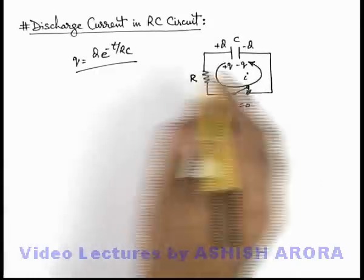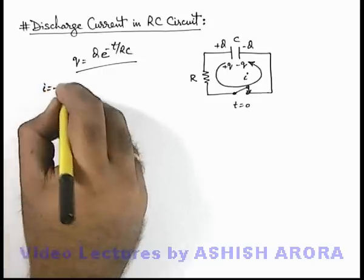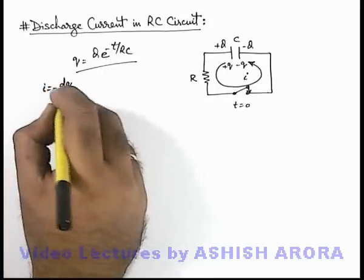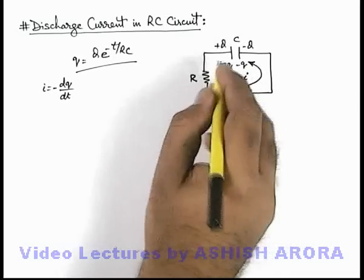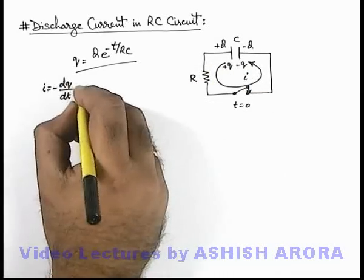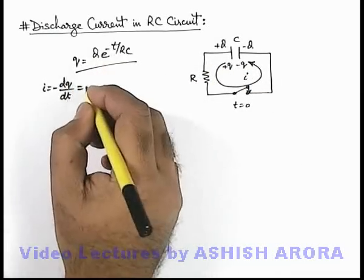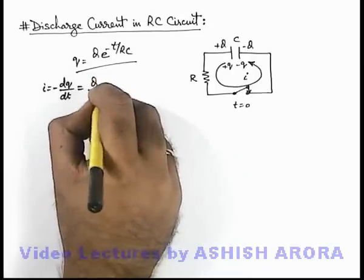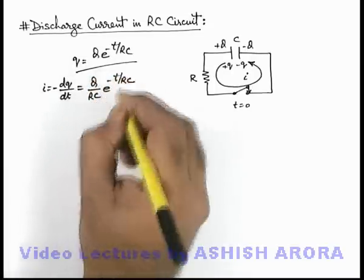In this situation, the discharge current we can directly write as minus dq/dt, and a negative sign is taken because charge is decreasing with time, so this slope will be negative. On differentiating, we get the current as Q/(RC) · e^(-t/RC).